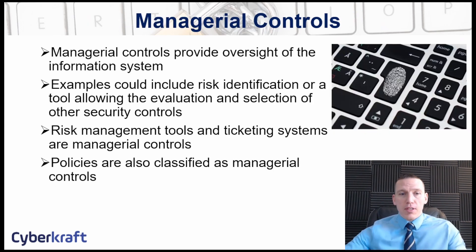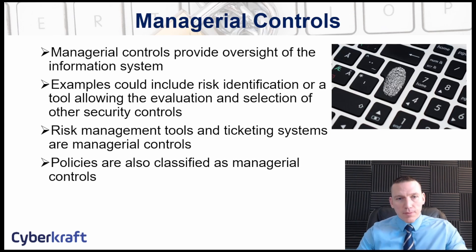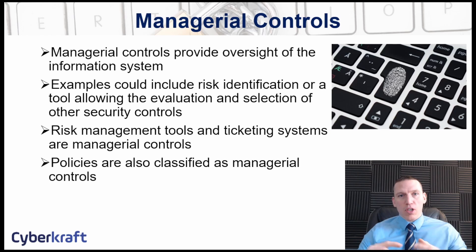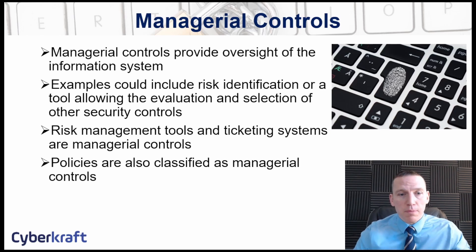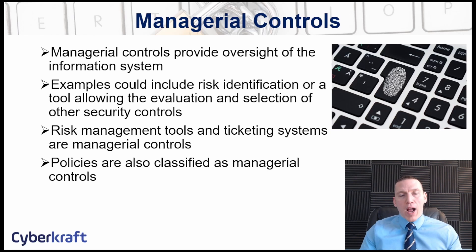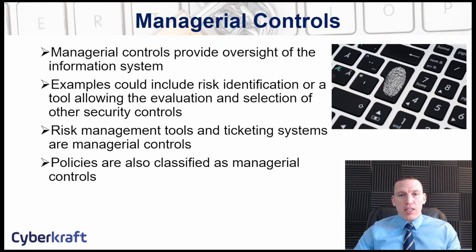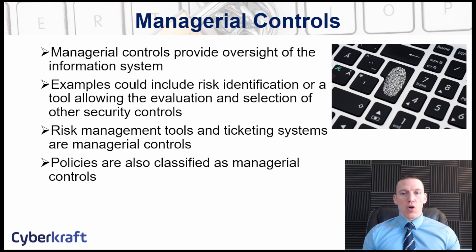Within these four categories, managerial controls provide oversight of information systems. These are high-level controls implemented by C-level executives — your CEOs, CFOs, and the CISO, the Chief Information Security Officer. These controls are usually designed around risk management and provide guidance on the overall direction that the organization wants to take or its overall risk management strategy.